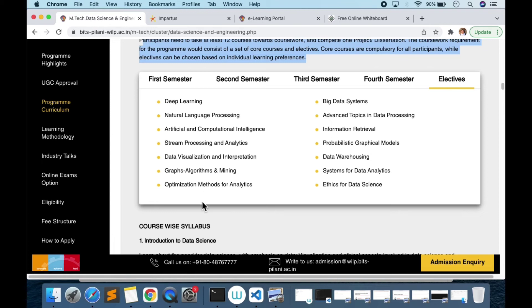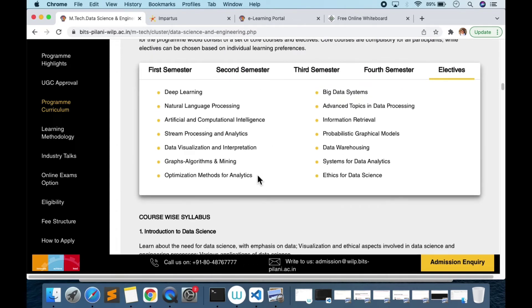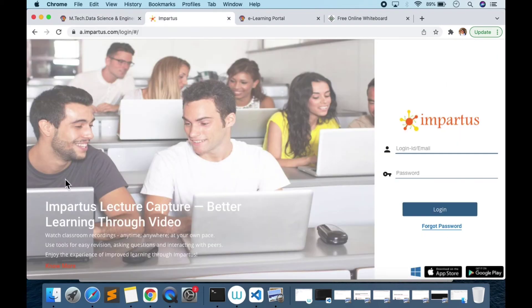When you go from semester to another semester always be very focused on what type of elective you are using. For example deep learning is a good take, natural language processing is a good take. Don't take artificial computational intelligence, it does not make a lot of difference. Graph algorithms and mining is really good, information retrieval is really really good, or you can go with probabilistic graphical model. These are my recommendations. Ethics for data science - just read 20 blogs on internet you are done. I don't think it's even a subject to be taken because here you want to build your technical knowledge not your theoretical.